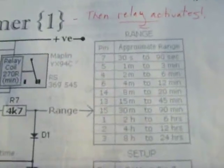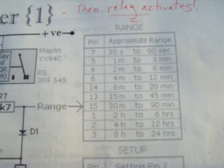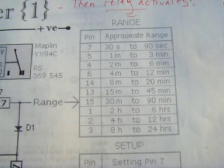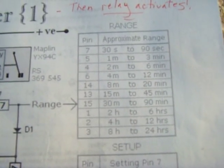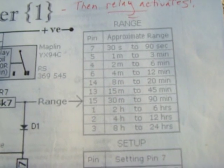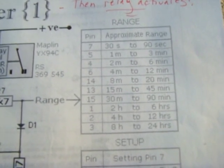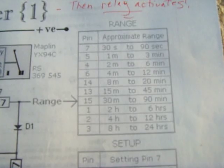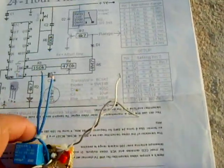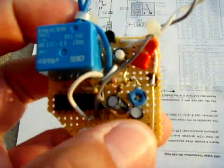If you look at this chart, you'll see all the time frames. Pin 15 is 30 minutes to 90 minutes, pin 5 is 1 minute to 3 minutes. That's where that white wire would connect. So if you want 10 minutes, you use pin 6. But you also have to set this potentiometer right here.